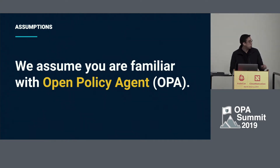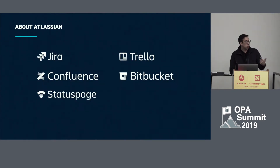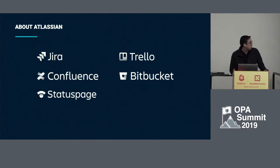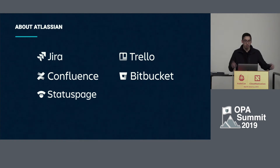We assume you're familiar with OPA — I saw the hands up, looked like everybody had their hands up earlier. Many of you may know our products like Jira, Confluence, Trello, Bitbucket, Status Page, and other things.